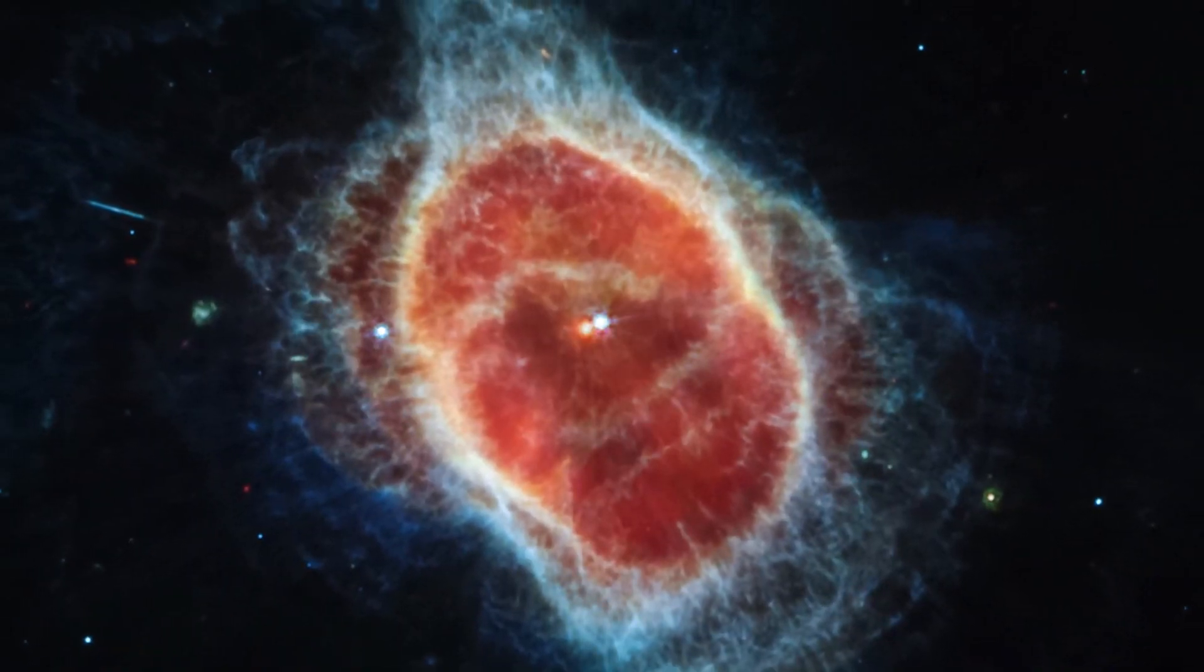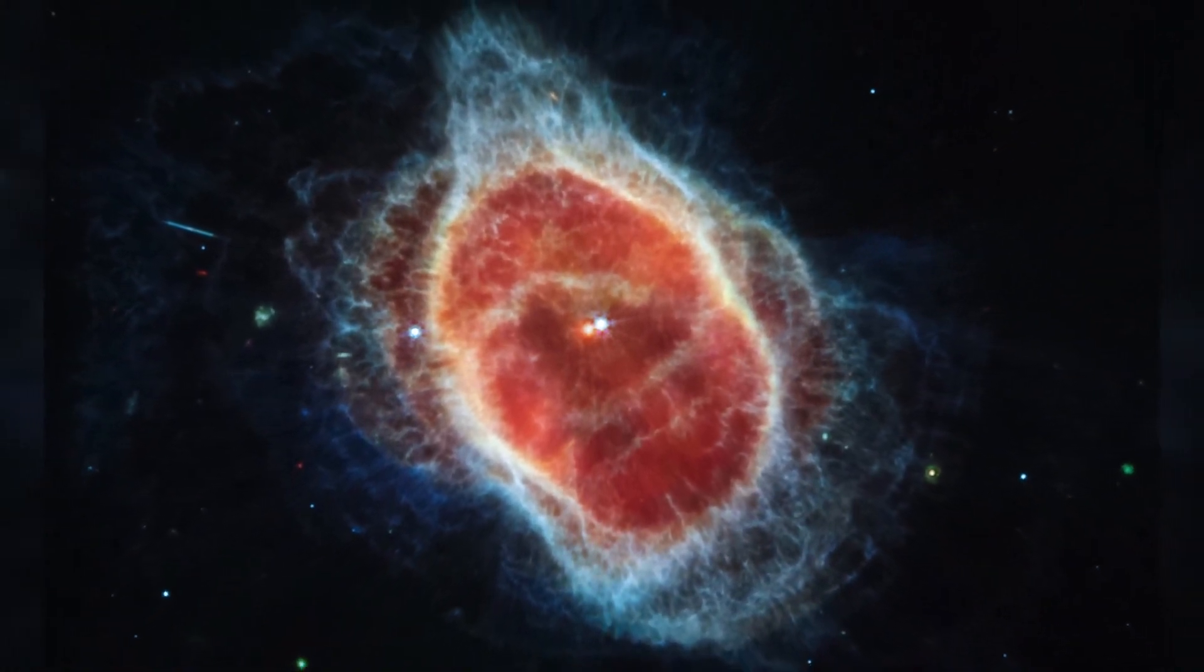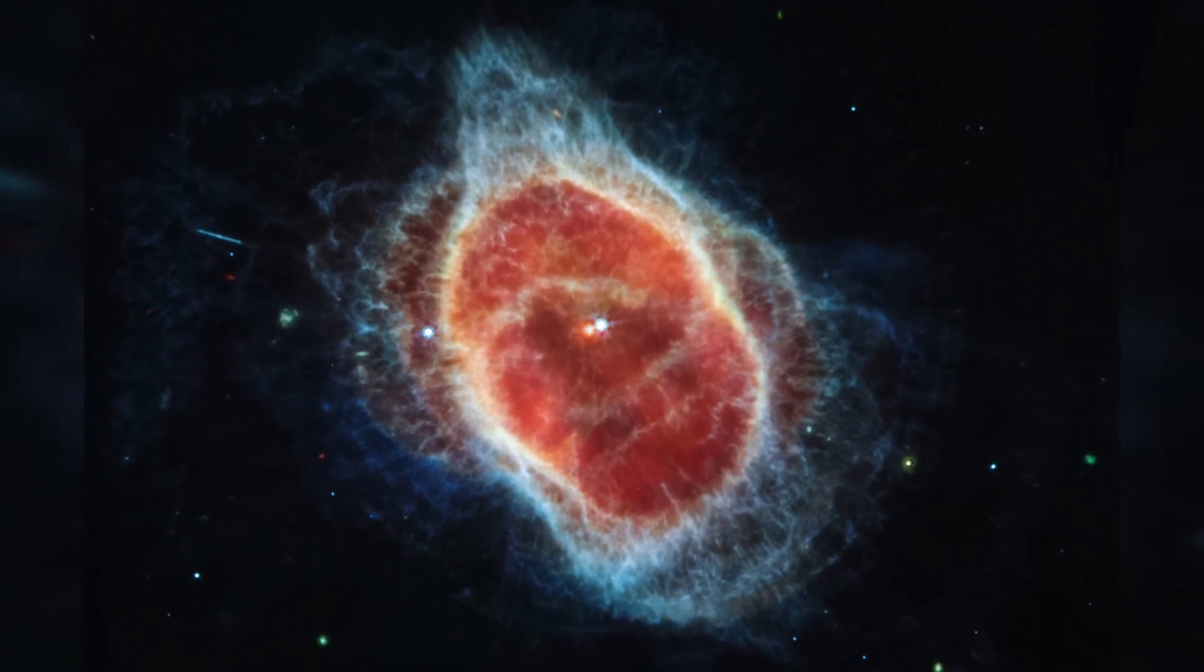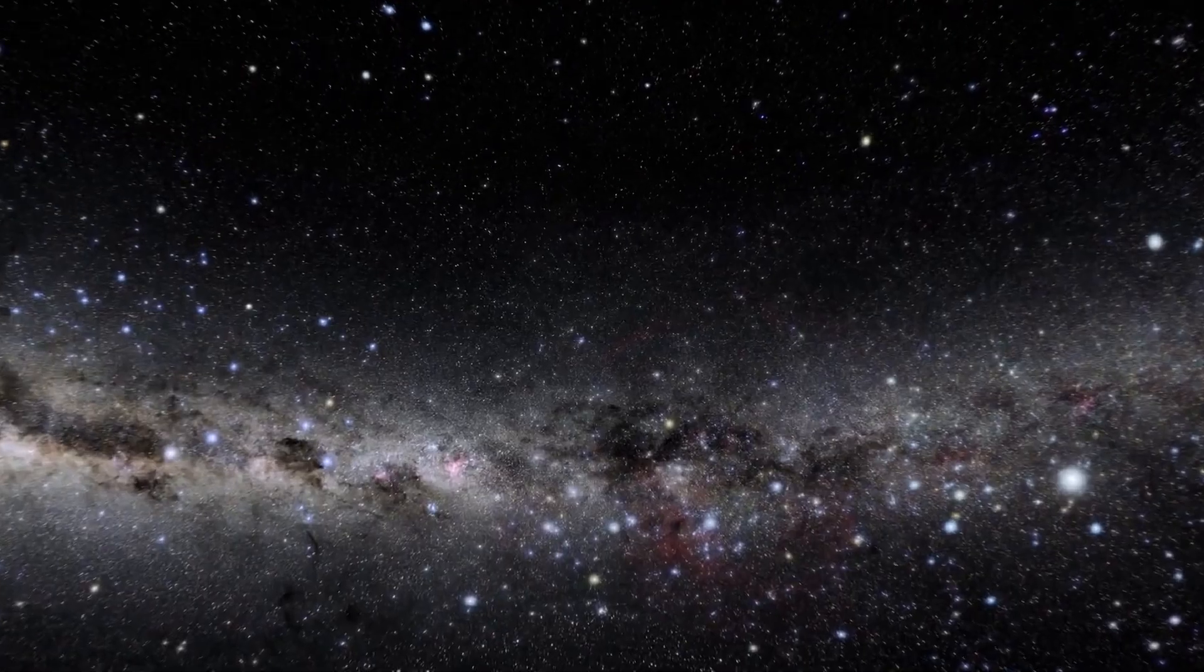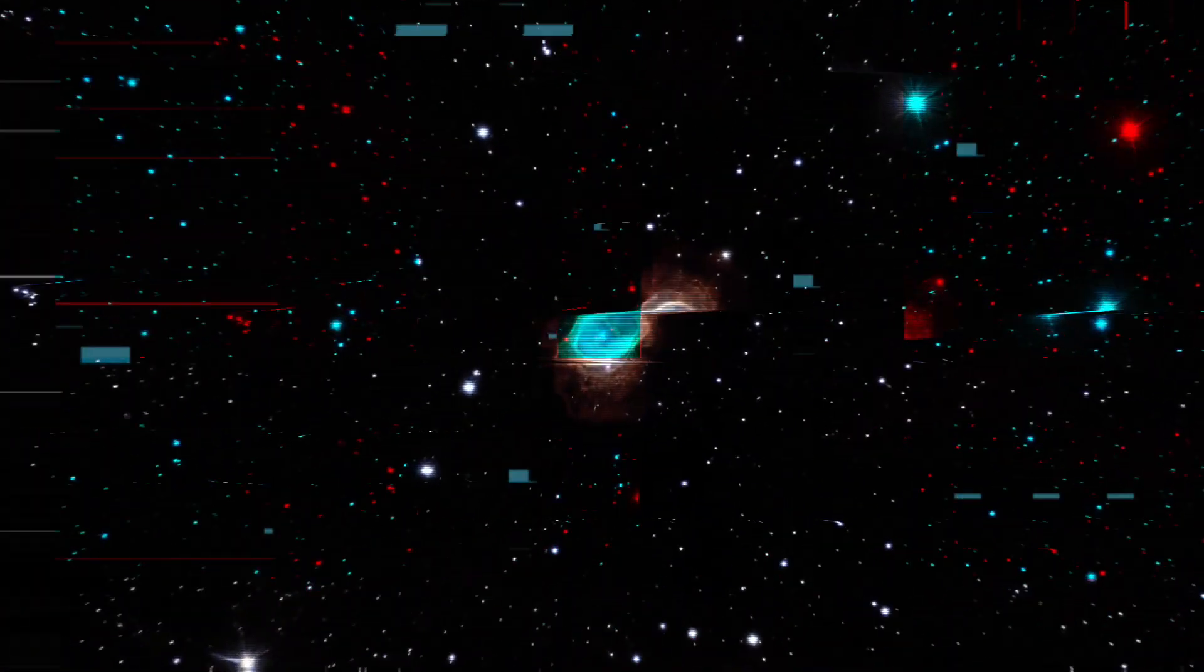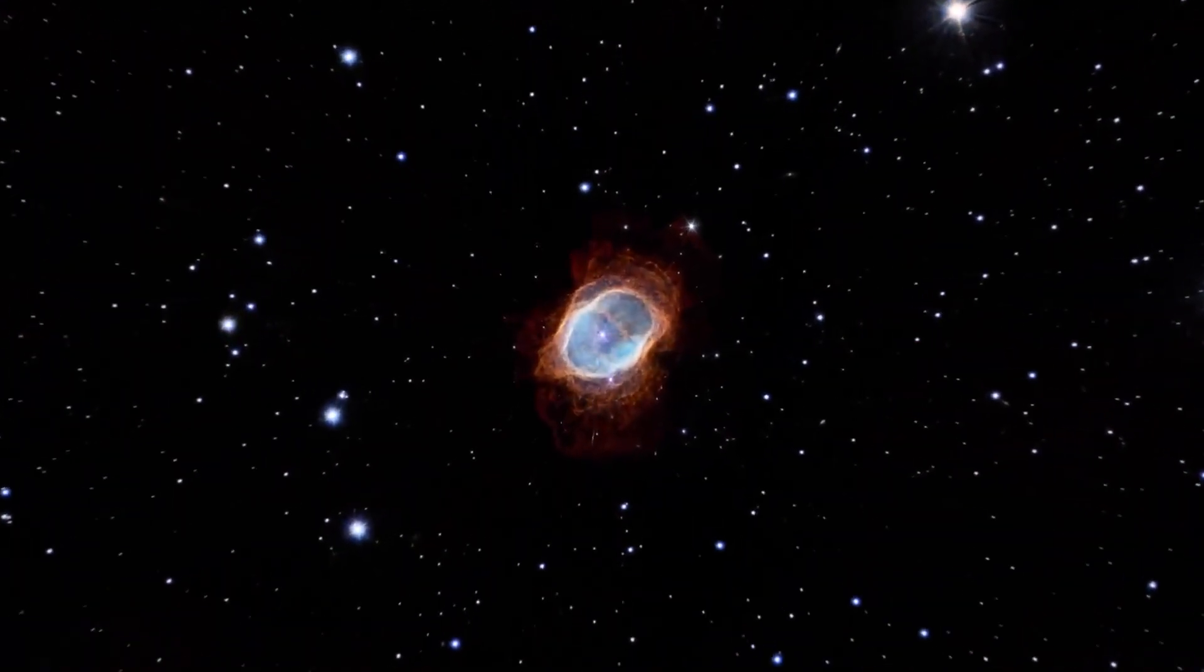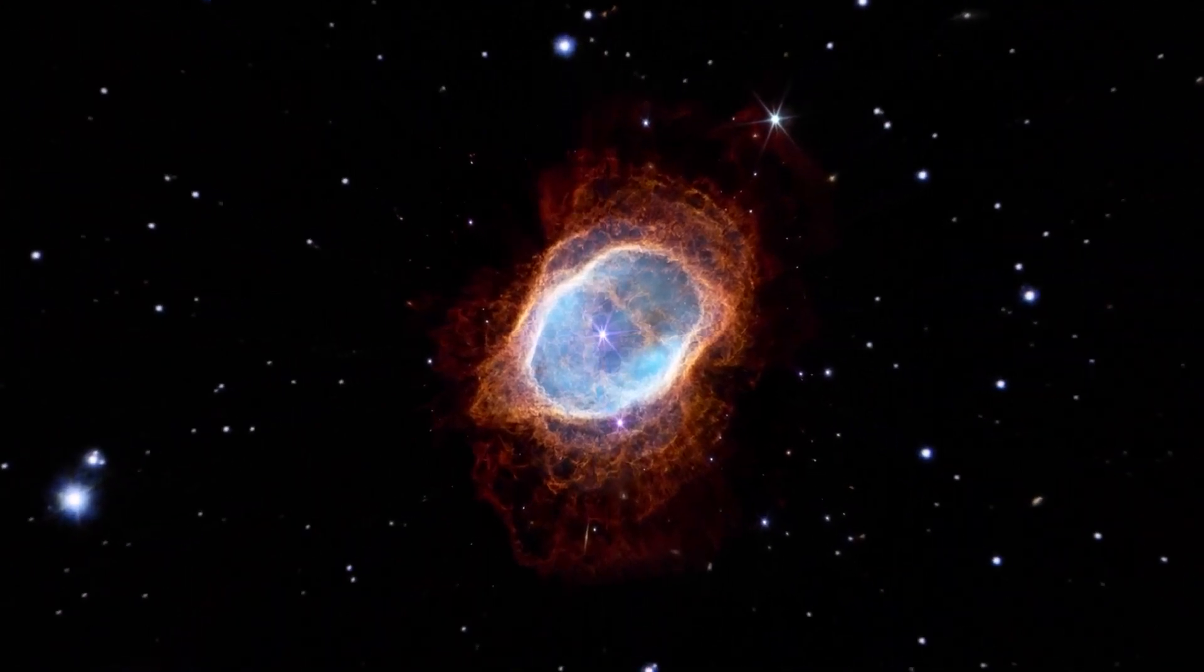Since planetary nebulae exist for tens of thousands of years, observing the nebula is like watching a movie in exceptionally slow motion. Each shell the star puffed off gives researchers the ability to precisely measure the gas and dust that are present within it. Furthermore, the dimmer star at the center of this scene has been sending out rings of gas and dust for thousands of years in all directions. And NASA's James Webb Space Telescope has revealed for the first time that this star is cloaked in dust.